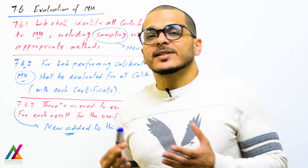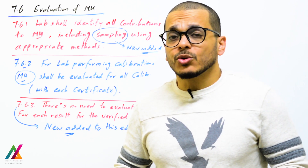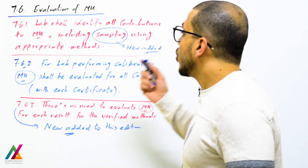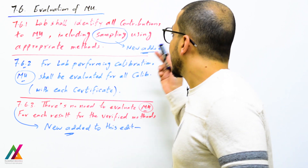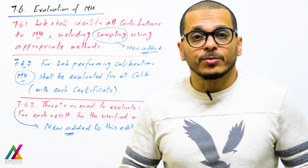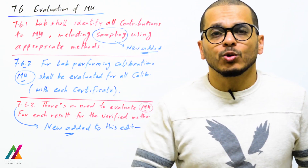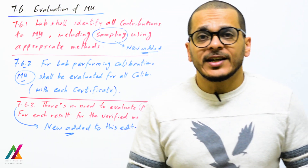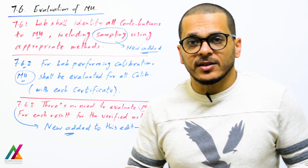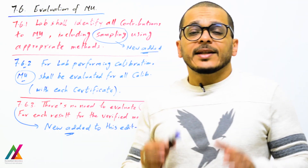Regarding evaluation of measurement uncertainty, the first rule is that the lab shall identify all contributions to measurement uncertainty, including sampling, using appropriate methods. You shall identify all factors affecting the measurement results from analysis and also from sampling. New to this edition, you shall also quantify measurement uncertainty due to sampling as well as analysis. Most of these will be combined to get combined uncertainty, and then you calculate expanded uncertainty.